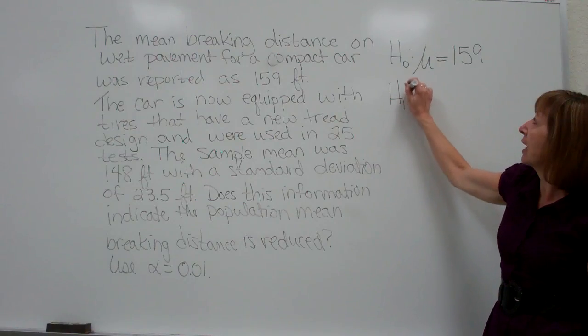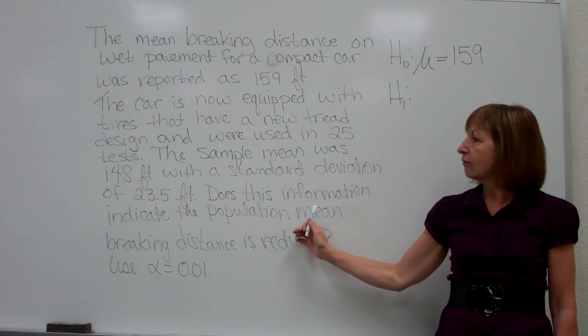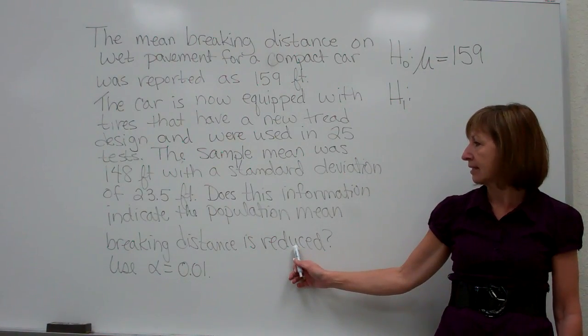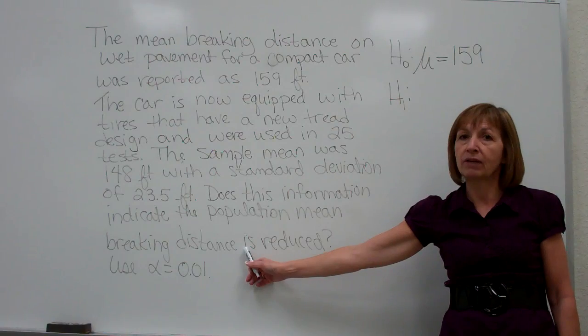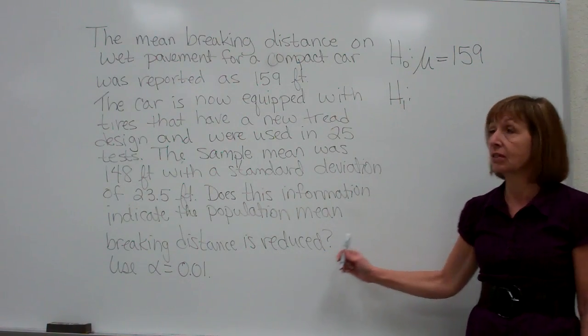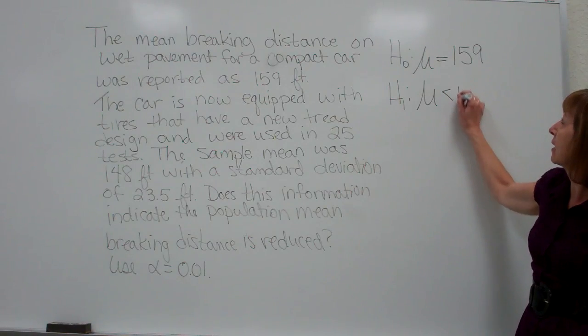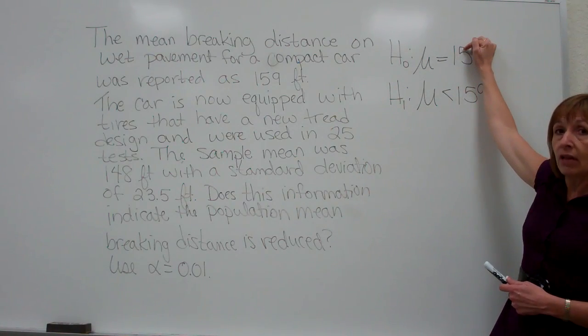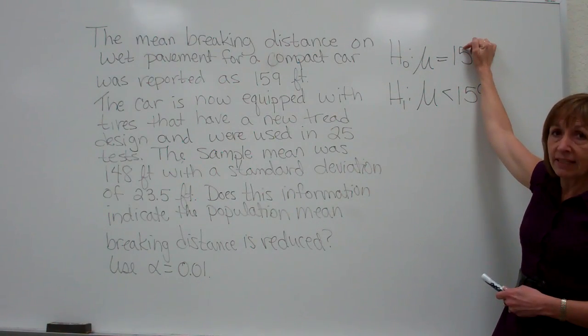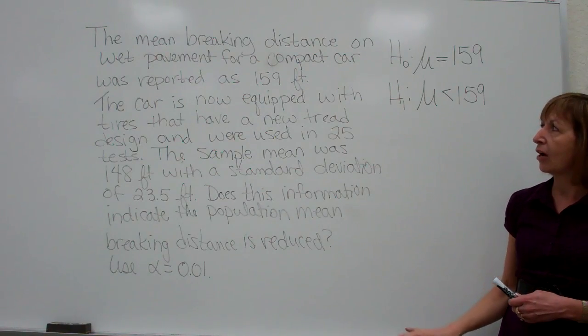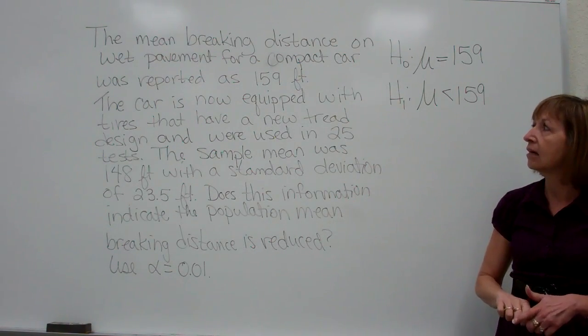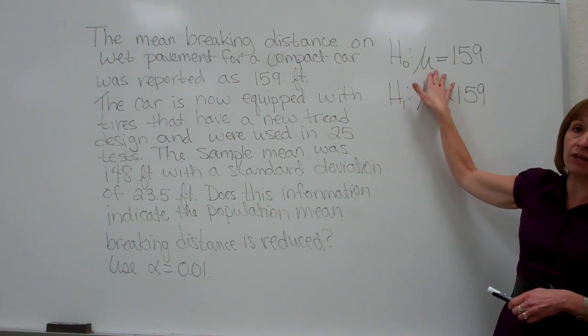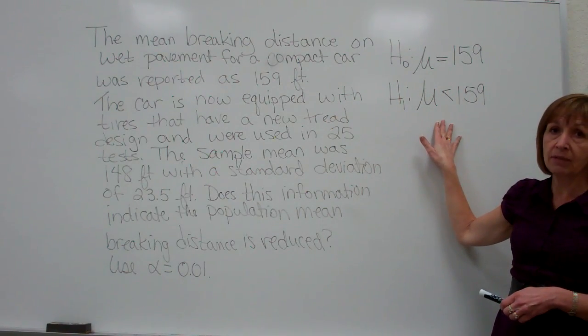And it's in our alternate hypothesis that we put the information about how that might have been changed off of what the parameter is. So here they want me to know if the population mean has been reduced. So we'll say mu is less than 159 feet for our alternate hypothesis. Now we have to stick with the null hypothesis unless we have sufficient evidence from comparing our sample information to say that we can reject the null. Only after we can reject the null would we be able to support the claim that's in the alternate.